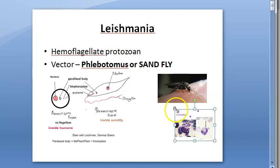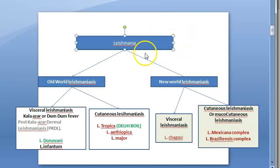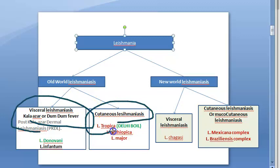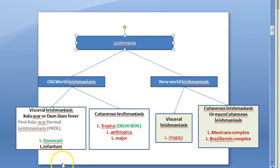In this video we will also learn about LD bodies — Leishmania Donovani bodies. Now, what does Leishmania cause? It causes visceral leishmaniasis and cutaneous leishmaniasis — only these two things.